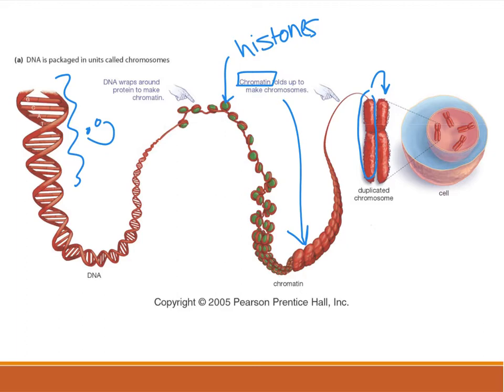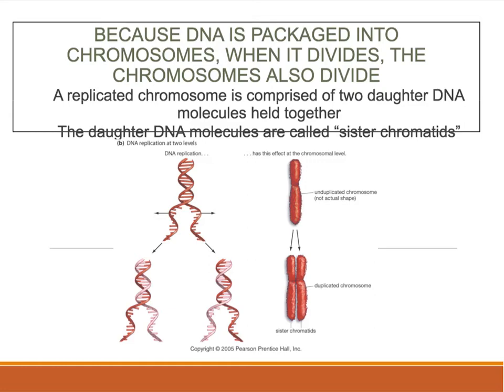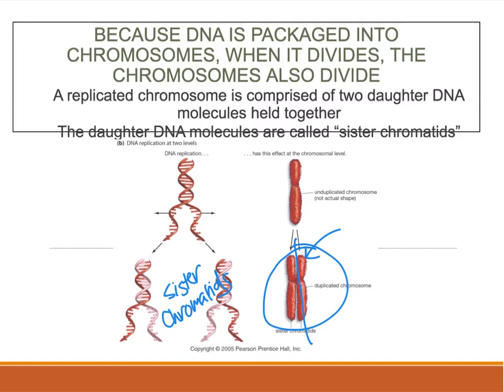We have 23 pairs of chromosomes — 46 chromosomes in every single one of our cells. When the cell divides, the chromosome divides too. As you've got replication, these strands of DNA make up the sister chromatids. When the cell divides, one complete copy goes to one cell and the other complete copy goes to another cell. Each one of these is called a sister chromatid, and they're identical.